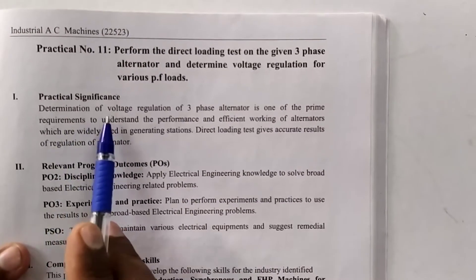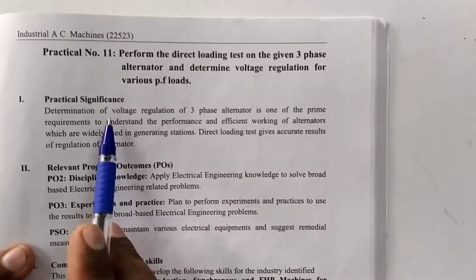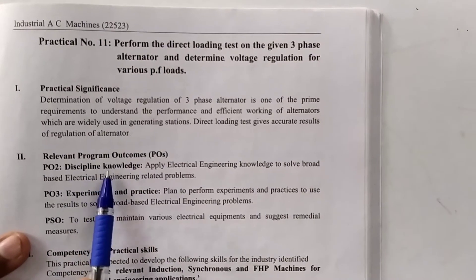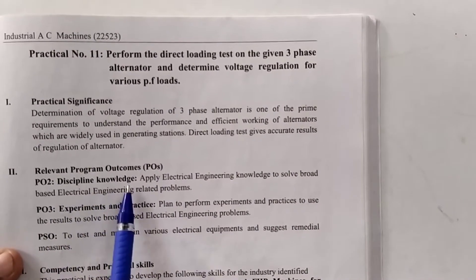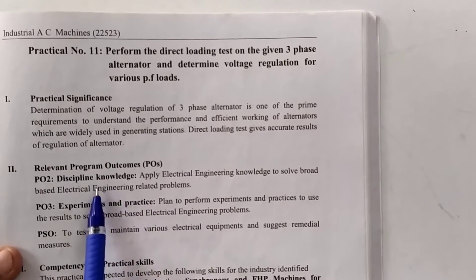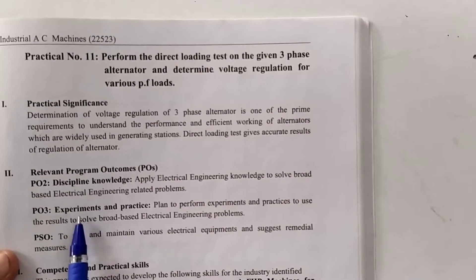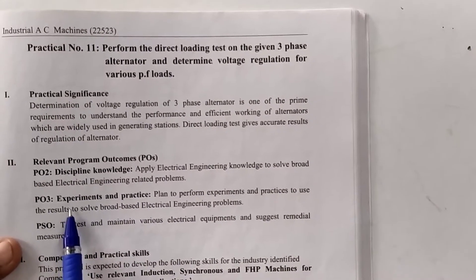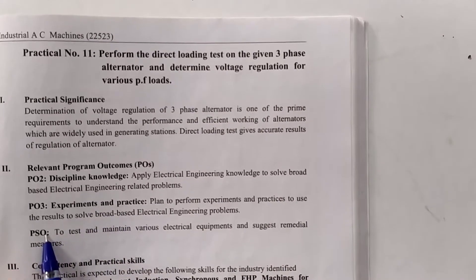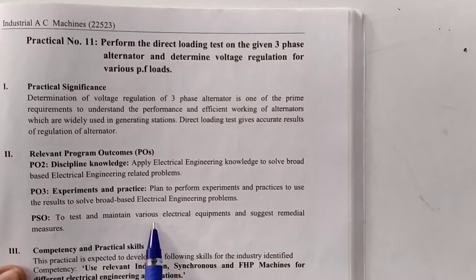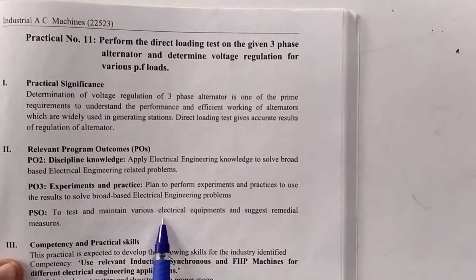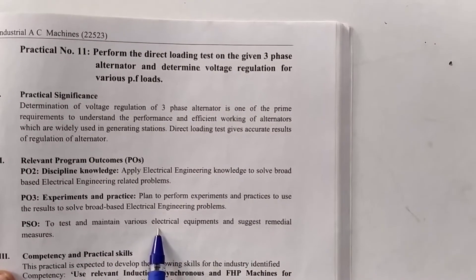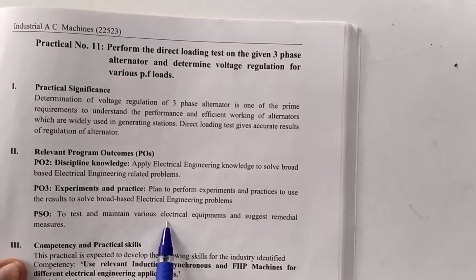So that we have to necessary to determine voltage regulation. The relevant program outcomes is PO2 means discipline knowledge. Student will able to apply electrical field of electrical engineering knowledge in day to day practice, experiment and practice and PSO to test and maintain the various electrical equipment. In this case we are using 3 phase alternator.